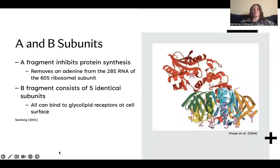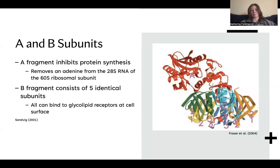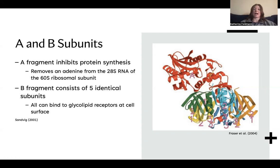So more depth about the A and B subunits. Here I have a picture on the right. The A fragment plays a role in inhibiting protein synthesis, and it accomplishes this by removing an adenine from the 28S RNA of the 60S ribosomal subunit, which is located in the host cell endoplasmic reticulum. This is connected to the B fragment by a disulfide bridge. The B fragment consists of five identical subunits, which you can see in different colors here on the bottom portion, and all of these subunits work to bind together to glycolipid receptors at the host cell surface.